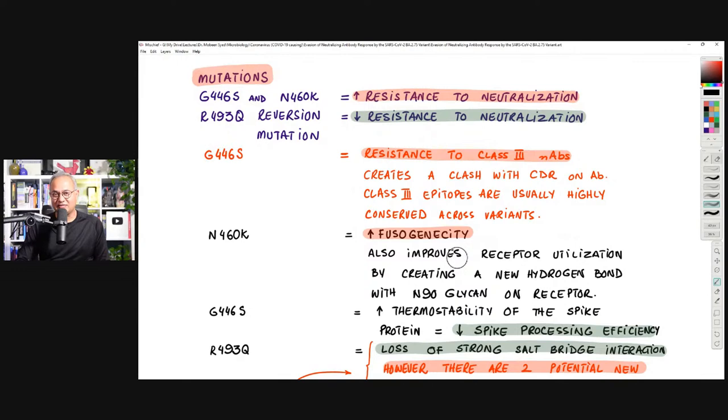Now, some quick things about these mutations. I think you're going to love this part. So, one mutation, G446 and N460K, these two mutations, have increased the resistance to neutralization from BA.2.2.2. R493Q reversion. It's a reversion, a mutation that has taken it back towards prototype or towards ancestor. It has reduced the resistance to neutralization. This reversal of the mutation has allowed it to become captured better by the antibodies produced against 4, 5, and three-dose vaccine.